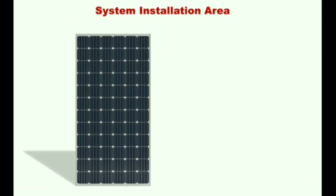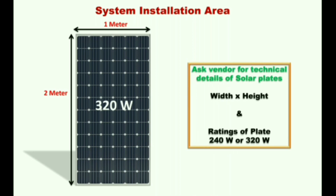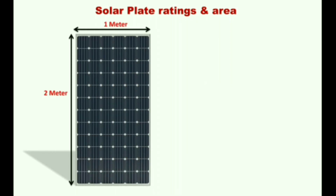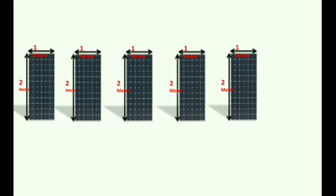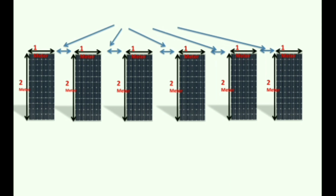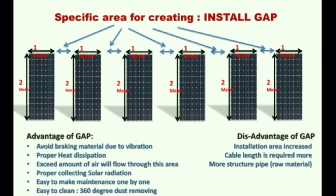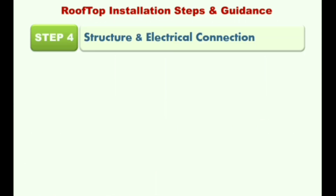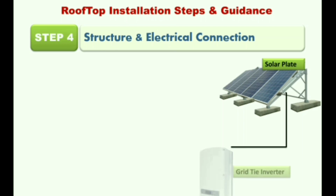To calculate the installation area, we first need the single panel dimensions — here it is 1 meter by 2 meters — and the overall installation area is calculated from that. A specific gap is required between plates on the structure frame, with advantages and disadvantages, but the conclusion is that a gap is required in all structures. Please see the electrical connection of the solar plant carefully, showing how the plates and solar energy meter are connected with the grid lines.